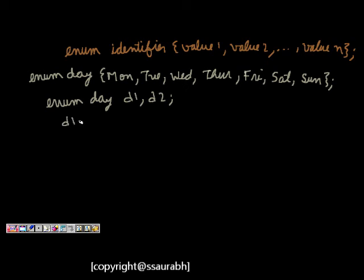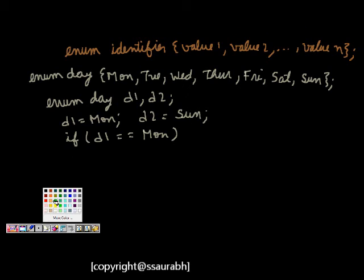We can say d1 is equal to Monday, d2 is equal to Sunday. We can assign values or even check if d1 is equal to Monday, then do something. One more thing is that these are all integer types by default. This is 0, this is 1, 2, 3, 4, 5 and 6.